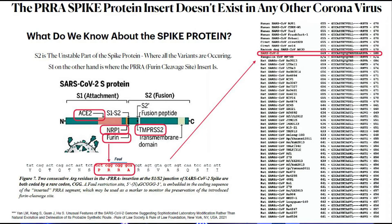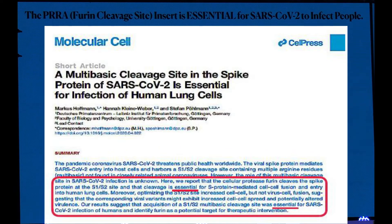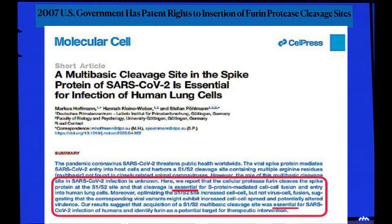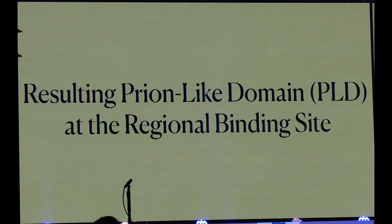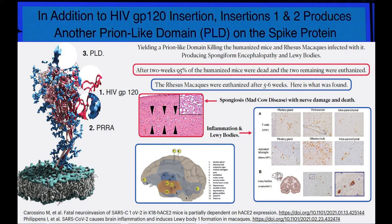Those are all the coronaviruses that exist on planet Earth, and this is the only one that has the PRRA insert. It's in the S1 component, which is the stable part of the spike protein, and it's critical for getting into cells via the furin cleavage site. Who owns the patent for inserting that? The U.S. government owns the patent for inserting what's found in this virus but in no other coronavirus on Earth.